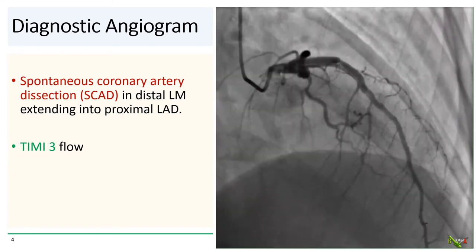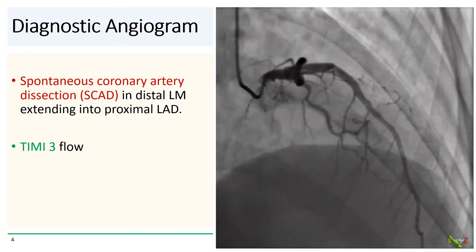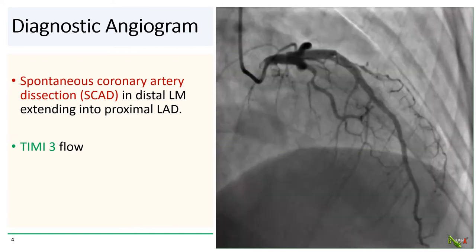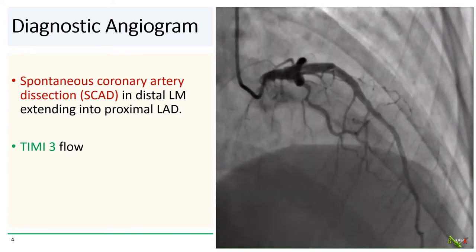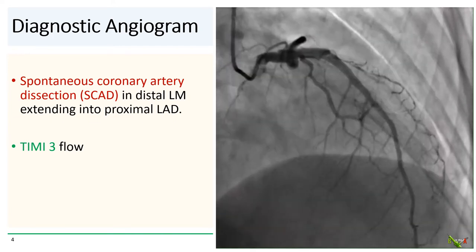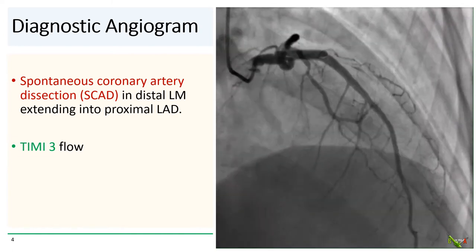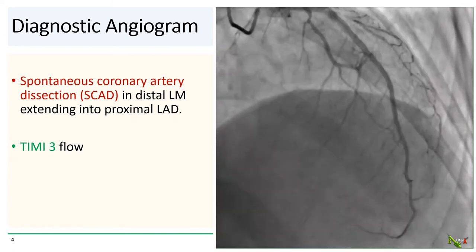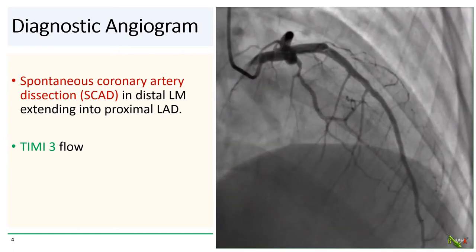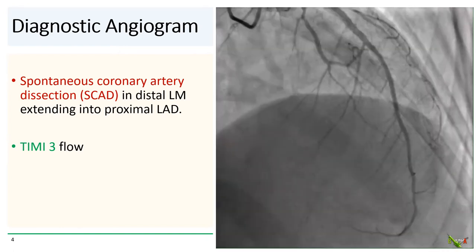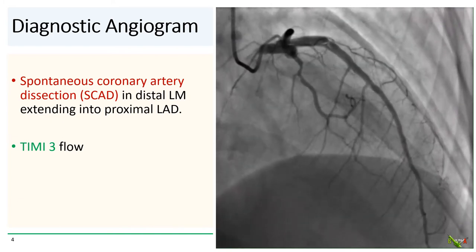Most of the time, it is actually quite difficult to differentiate the true lumen from the false lumen. In this case, however, it seems pretty clear that the true lumen is inferior to the white line and the false lumen is the uplifted section above the white line. This is a fairly dramatic example of a type 1 spontaneous coronary artery dissection that extends from the distal left main into the proximal LAD.